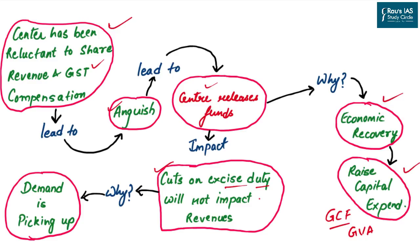Why does the central government say that despite the cut in excise duty there is no revenue loss? The reason is a rise in demand in the economy. If the government reduced excise duty on petrol, for instance, because of the rising demand for petrol and diesel in the country, the government can still achieve its revenue targets. This was the basic crux of this article.